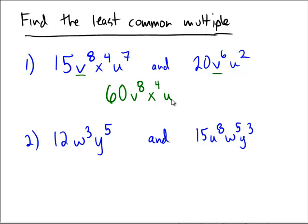Now for the U, on the left-hand side we have U to the 7th, and on the right-hand side we have U to the 2. So between 7 and 2, of course 7 is larger, so that's the one we're going to take. The least common multiple would be 60V to the 8th, X to the 4th, U to the 7th.